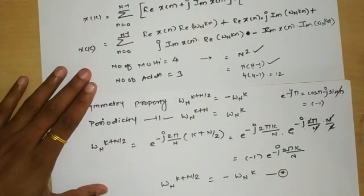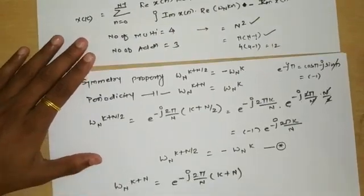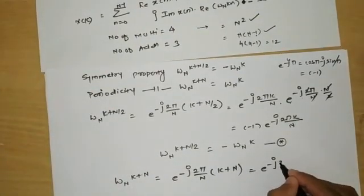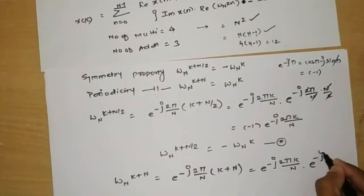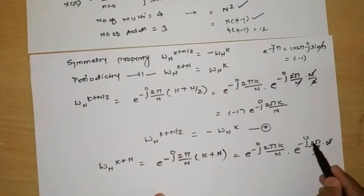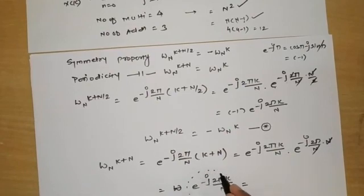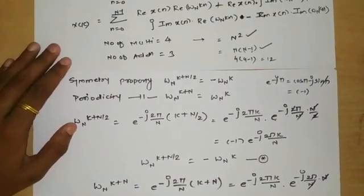The periodicity property states: W_N raised to (k + N) = W_N raised to k, meaning adding N to the exponent repeats the same value. Proof: W_N^(k+N) = e^(−j2π/N · (k+N)) = e^(−j2πk/N) · e^(−j2π). Since e^(−j2π) = cos 2π − j sin 2π = 1, we get e^(−j2πk/N) = W_N^k, confirming periodicity.